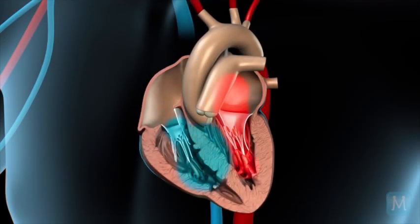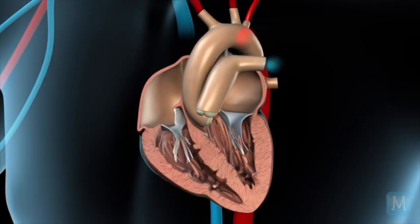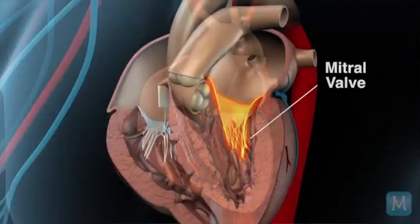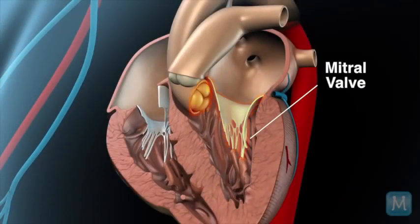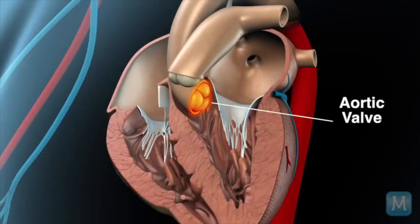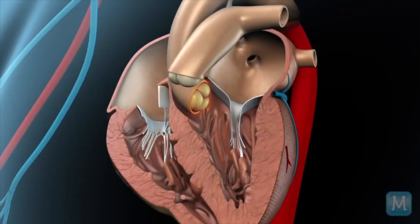The two valves on the left side of the heart — the mitral valve and the aortic valve — are actually not infrequently involved with heart diseases in adults.